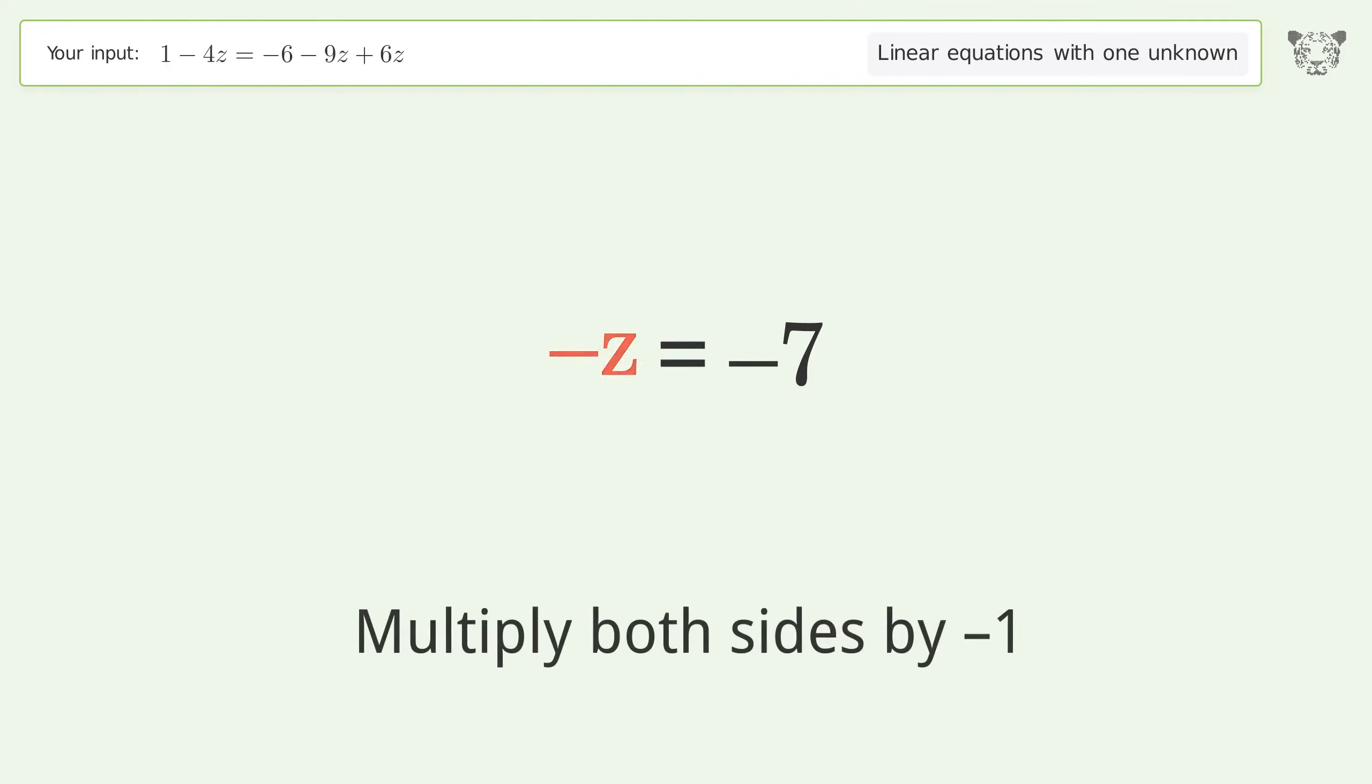Convert the z into a positive number. Multiply both sides by negative 1. Remove the 1s. Simplify the arithmetic.